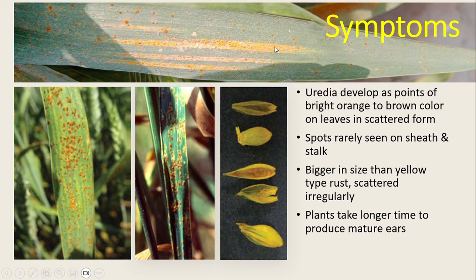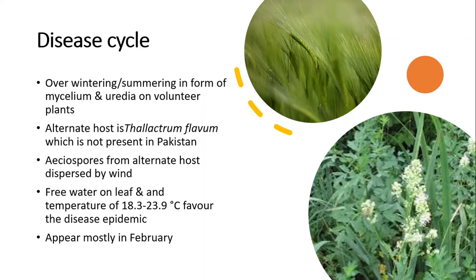Infected plants take a longer time to produce mature ears. Looking at the disease cycle: over-wintering and over-summering occur via mycelia and uredinia on volunteer plants. The alternate host is Thalictrum flavum.